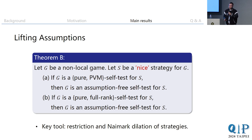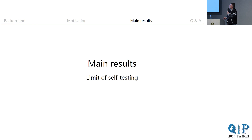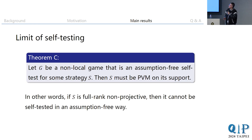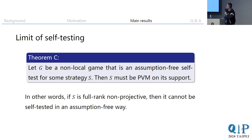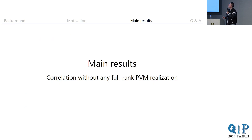Theorem C concerns the limit of self-testing. It says: if a game G assumption-free self-tests S, then S must be projective on its support. In other words, if S is full-rank but non-projective, then it cannot be self-tested in an assumption-free way. We believe this was not previously known, and the message is that we cannot self-test non-projective measurements in an assumption-free manner.